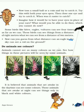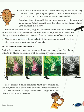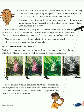Some birds like kites, eagles, and vultures can see four times as far as we can. These birds can see from a distance of 8 meters what we can only see from 2 meters. Can you guess from what distance an eagle in the sky can see a roti on the ground? An eagle can see from a distance of 1.5 to 2 kilometers.